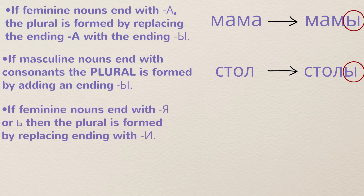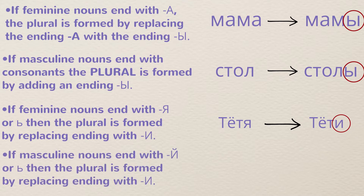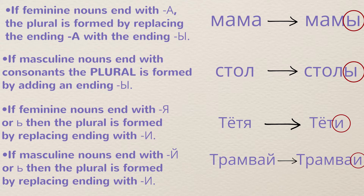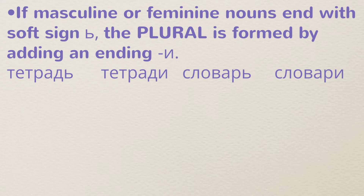If a feminine noun ends in singular with Я, then the plural is formed with soft Е (И) — for example, 'тётя' becomes 'тёти', so the Я ending is replaced with И. If a masculine noun ends with Й in singular, then the plural is also formed with Е (И) — for example, 'трамвай' becomes 'трамваи', so Й is replaced with И. For nouns ending with a soft sign, whether masculine or feminine, the soft sign is replaced with the ending И in the plural: 'тетрадь' → 'тетради', 'словарь' → 'словари'.